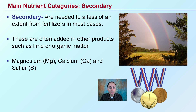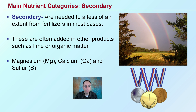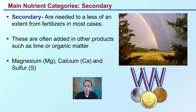Proceeding on from macronutrients, we then go to secondary nutrients. These are needed to less of an extent from fertilizers, in most cases and for most plants. They're often added in other products such as lime or organic matter. These secondary nutrients are typically magnesium, calcium, and sulfur — needed, but to a lesser extent than those macronutrients.